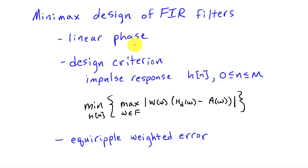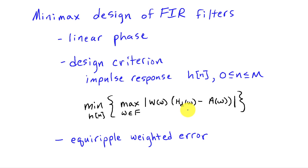We're going to assume that we have linear phase, and then the design criterion specifies the impulse response H of n of the filter, which is finite duration because it's a finite impulse response filter. The impulse response is assumed to go from 0 to M, and we say that the order of the filter is M. Our criteria is to find the impulse response, subject to it being linear phase, that minimizes the maximum error over a set of frequencies omega contained in F. Our weighted error is defined as a weighting function W times the difference between our desired frequency response and the actual frequency response. In both of these cases, the phase factors have been removed, which is why we're using A of omega to represent the amplitude or the real portion of the generalized linear phase associated with the FIR filter. So we're going to find a solution that minimizes the worst-case weighted error in this region.